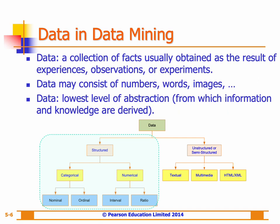Ordinal data contains codes assigned to objects or events as labels that also represent the rank order among them. For instance, a credit score can be categorized as low, medium, or high. Similar ordered relationships appear in variables such as age group — child, young, middle-aged, or elderly — or educational level, ranging from high school to college or graduate school.